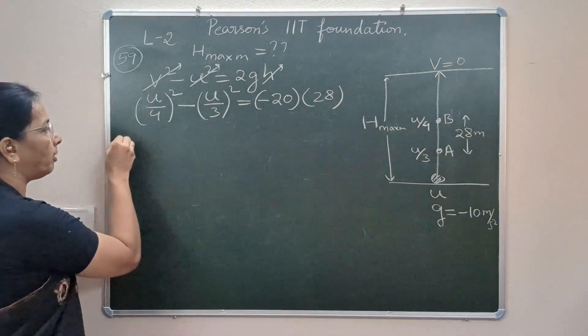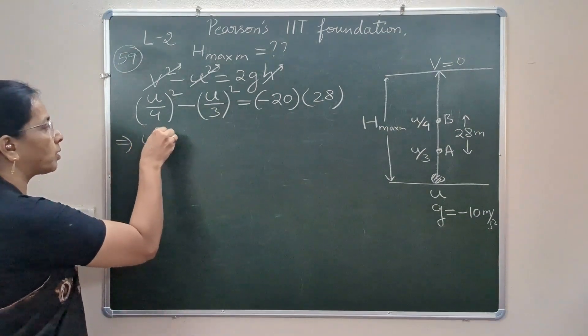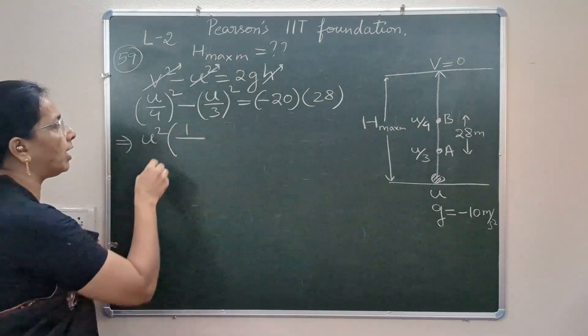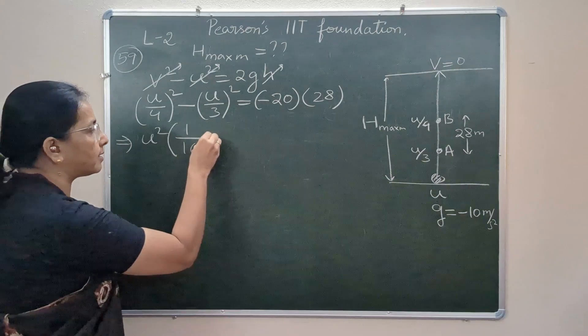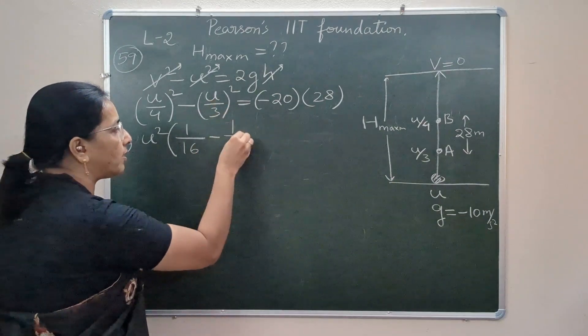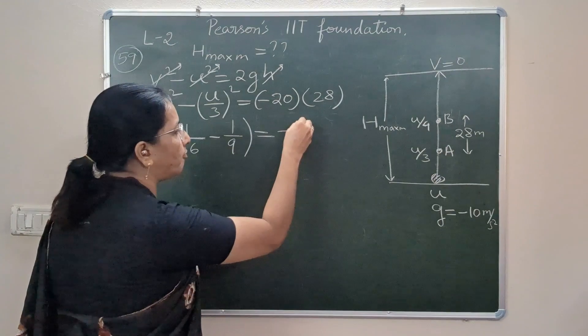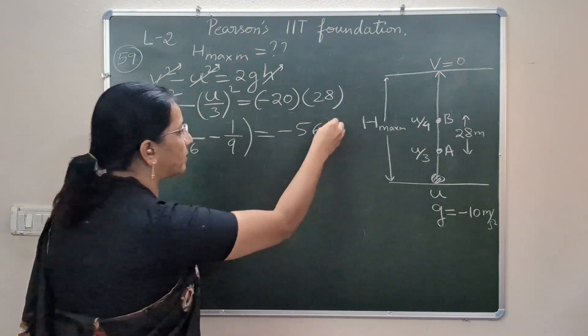Here u² is highest common factor, so we will take u² out, and in the bracket we have 1/4² that is 1/16 and 1/3² that is 1/9, and on the other side we have minus 560.